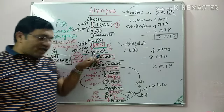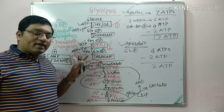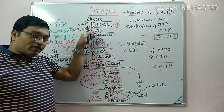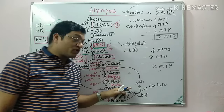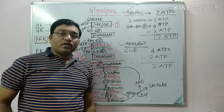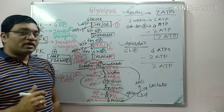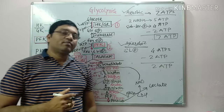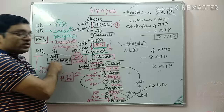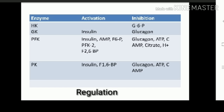In summary, this lecture covered: the steps, regulation, irreversible steps, committed and rate-limiting steps, substrate-level phosphorylation steps, and the energetics of the glycolytic pathway. Regulation is mainly by insulin (activating) and glucagon (inhibiting). The pathway is also allosterically activated by AMP and fructose-2,6-bisphosphate.